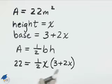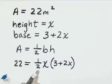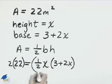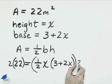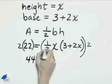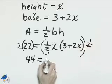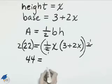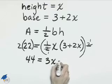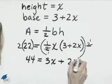I'll multiply everything by 2 in order to eliminate this denominator. Multiply the left side by 2, multiply the right side by 2. That gives us 44 equals—these twos will divide away—x times the quantity 3 plus 2x, which we can multiply through and get 3x plus 2x squared.